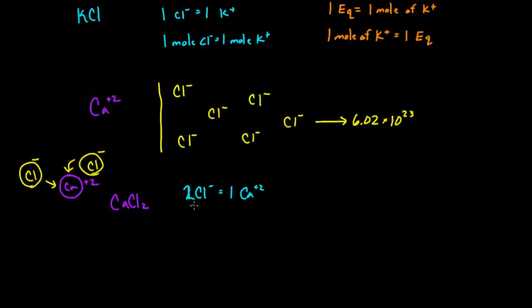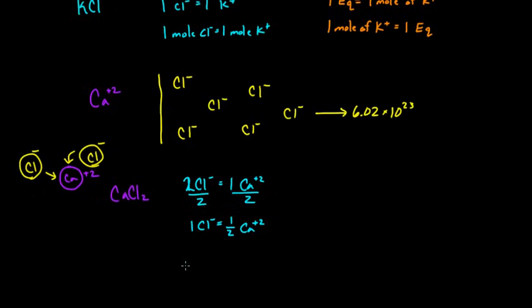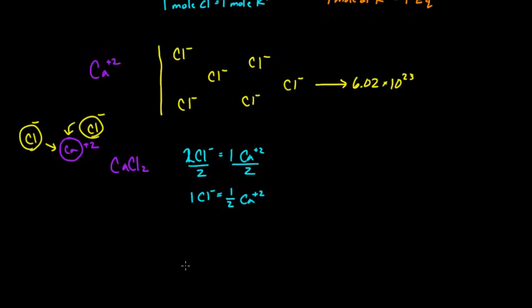So let me write that out very clearly. So for every one calcium, or actually I can write, for every two chlorides, you get one calcium. And that means that if I divide both sides by two, for every one chloride, I basically needed a half a calcium.